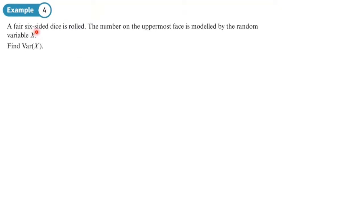A fair six-sided dice is rolled. The number on the uppermost face is modeled by the random variable X, find Var(X). So the first thing we need to do is draw this table. When you get questions like this always draw the table out so you can see your outcomes and your probabilities and then you can do your working from that. So it's a fair six-sided dice, that's what's going to be in the table.